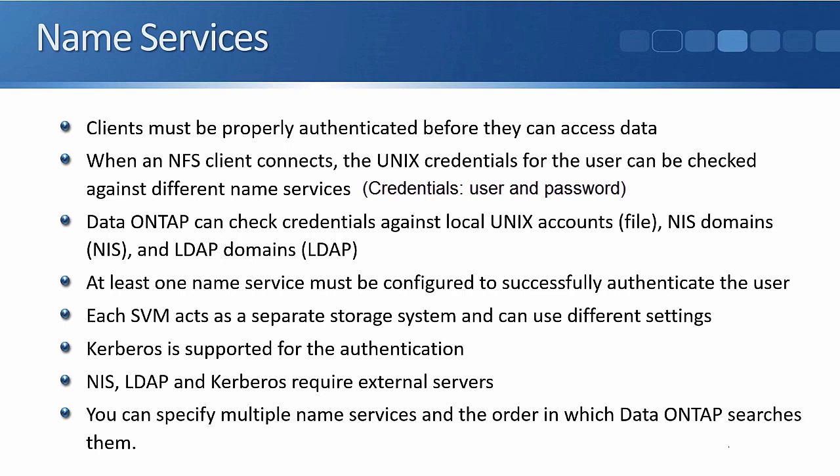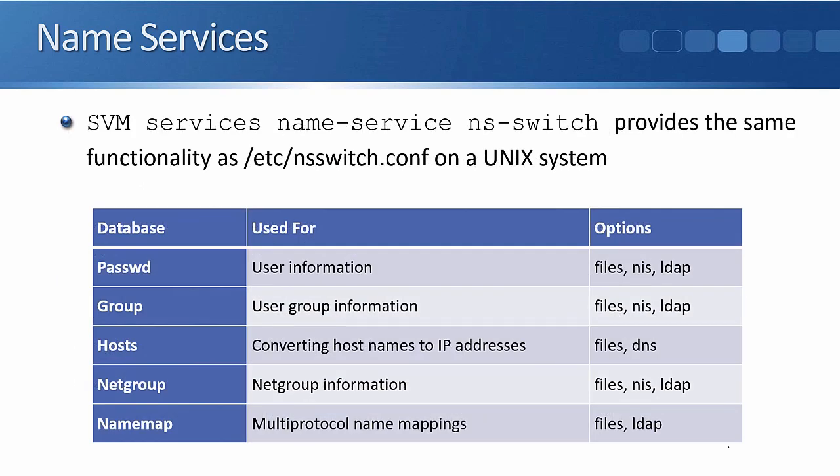You can specify multiple name services and the order in which Data ONTAP searches them. For example, you could configure it to check LDAP first, and if LDAP does not return a result or is unavailable, fall back to the local file type. The command `vserver services name-service ns-switch` is used to configure this at the command line. It can also be configured in the GUI, and it provides the same functionality as the `/etc/nsswitch.conf` file on a Unix system.